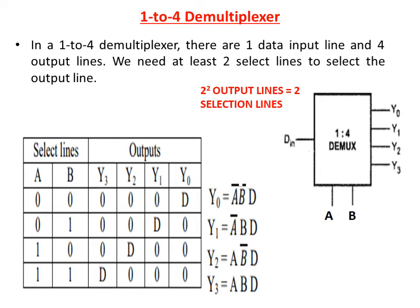1 to 4 D-multiplexor. In a 1 to 4 D-multiplexor, there are 1 data input line and 4 output lines, so we need 2 selection lines to select the output line. This is the block diagram representation with single input D-in, selection inputs A and B, and the outputs are Y0, Y1, Y2, Y3.